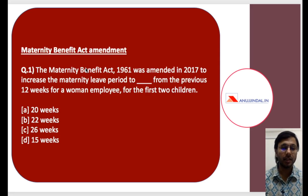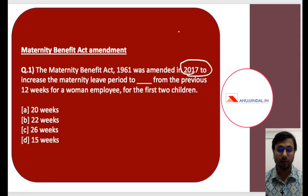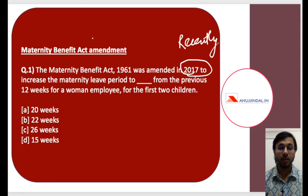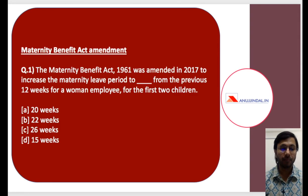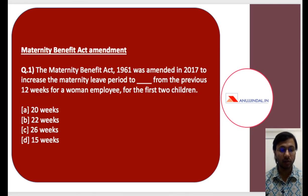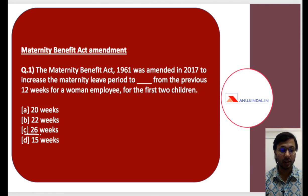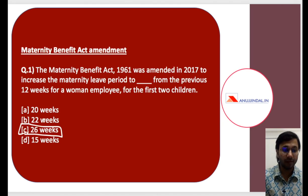The first question is about the Maternity Benefit Act 1961, which was amended in 2017. Because it was amended very recently, it becomes important. This amendment was made to increase the maternity leave period from the previous 12 weeks for a woman employee for the first 2 children. The answer to this question is C — 26 weeks. So it has been increased from 12 weeks to 26 weeks.